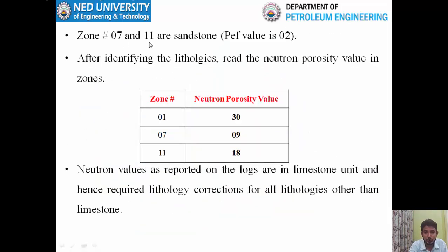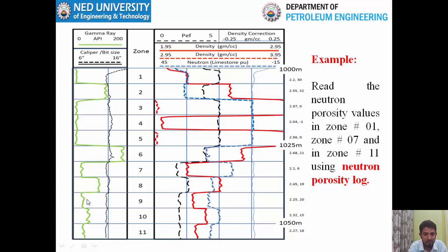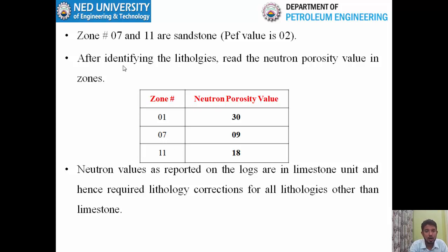Zone number 7 and 11 are sandstone. The PEF value in zones 7 and 11 is 2. Zone number 7 has a PEF value of 2. Similarly, zone number 11 has a PEF value of 2. Since a PEF value equal to 2 indicates most likely sandstone, both zones are identified as sandstone. The density-neutron crossplot can also confirm these lithologies, but since we haven't studied it yet, we will not use it right now.